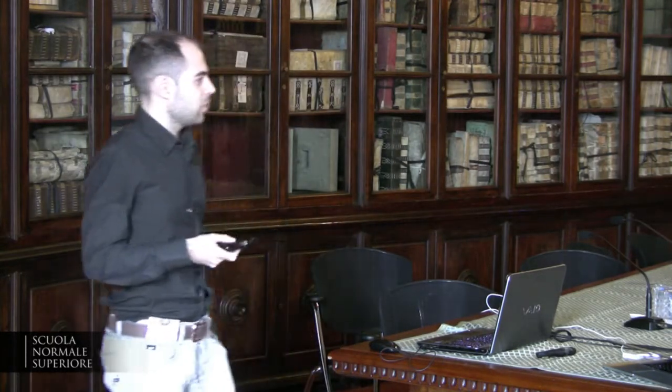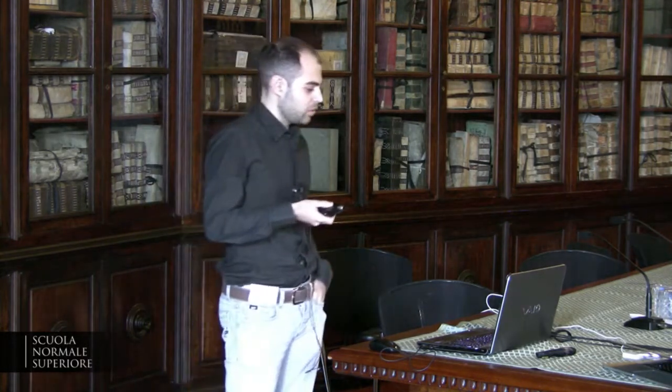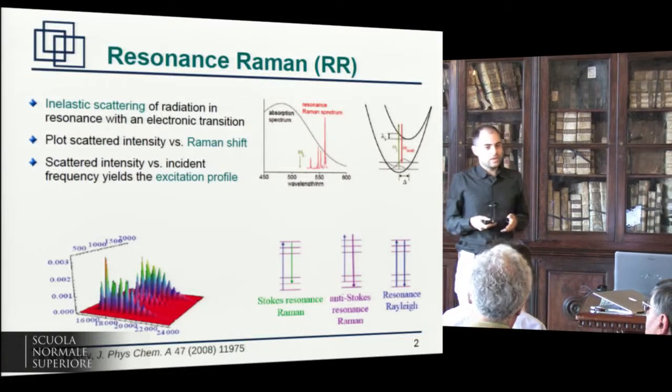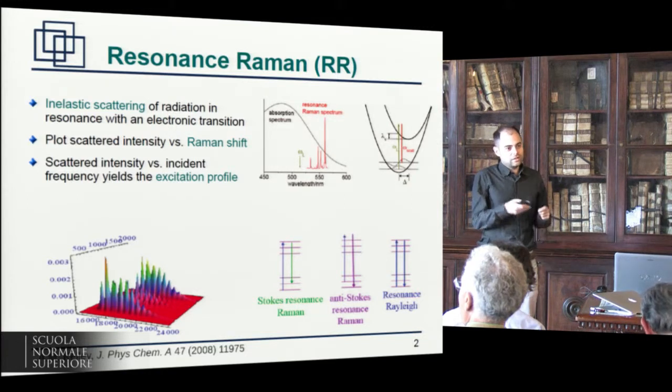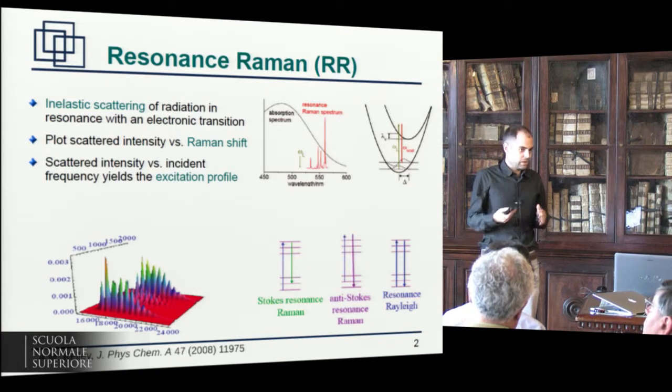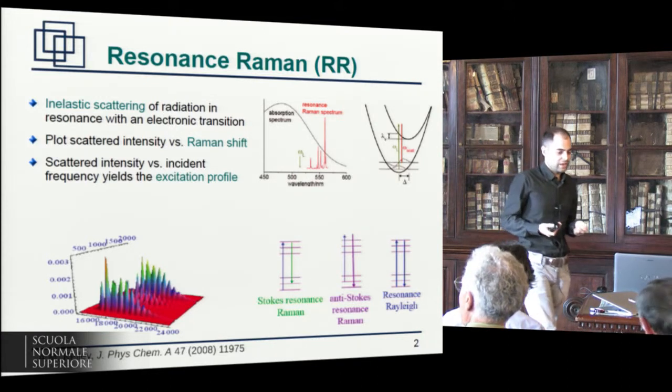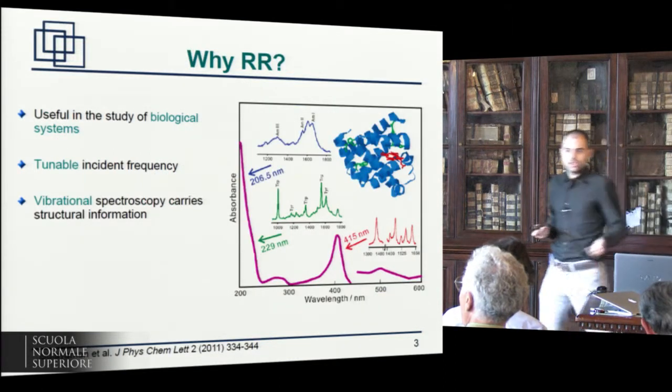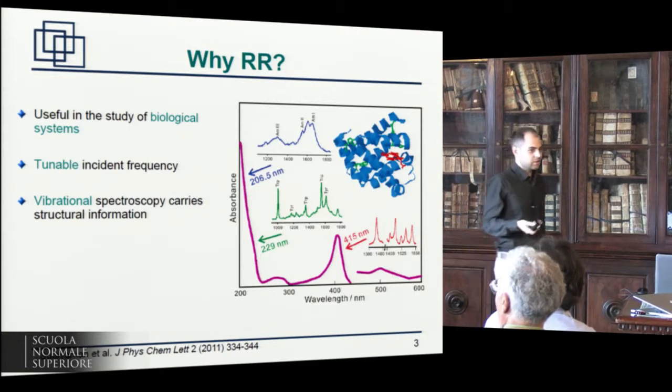Just two very quick words about this kind of spectroscopy. Resonance Raman is just like regular Raman spectroscopy that everybody knows about. The only difference is that the incident laser frequency is in resonance with an electronic transition of the system. As you do in regular Raman, you plot the scattered intensity with respect to the Raman shift to obtain the spectrum or with respect to the incident frequency to obtain what is called the excitation profile. The real advantage of doing something like Resonance Raman is that you get a huge enhancement of your spectroscopic observable if you are in resonance with an electronic transition.